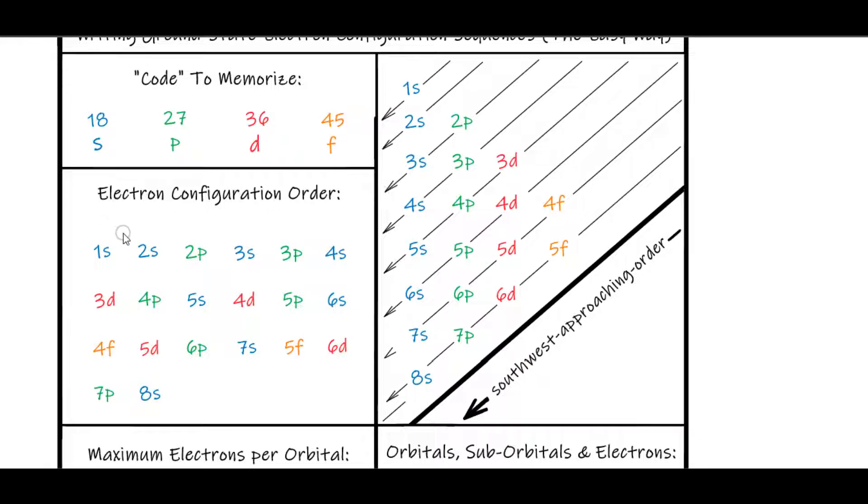Going about trying to memorize the electron configuration order is kind of tedious and not really practical, but if you just write this code and then arrange the orders geometrically and approach southwest on the count or the sequence, then you have your electron configuration order per orbital.